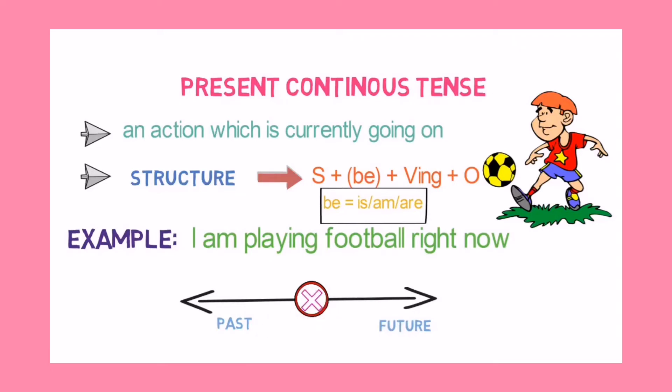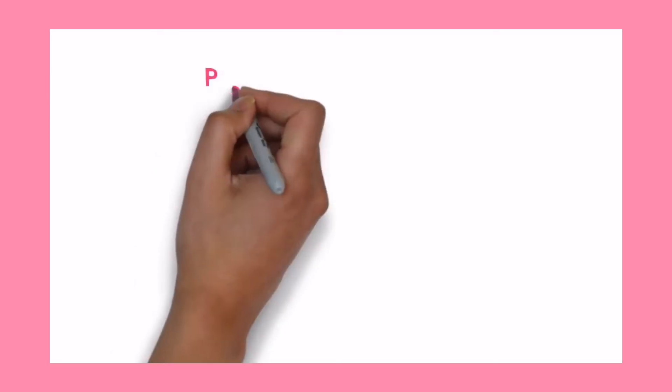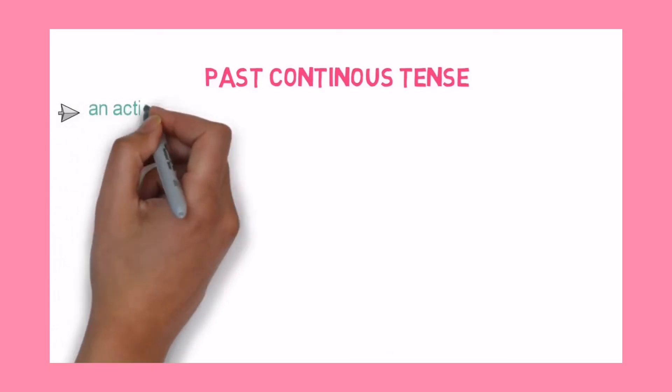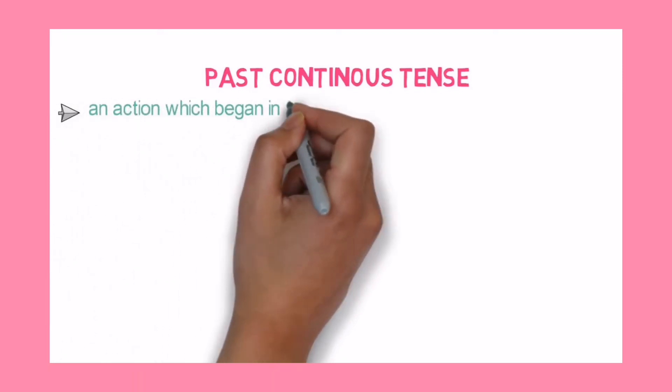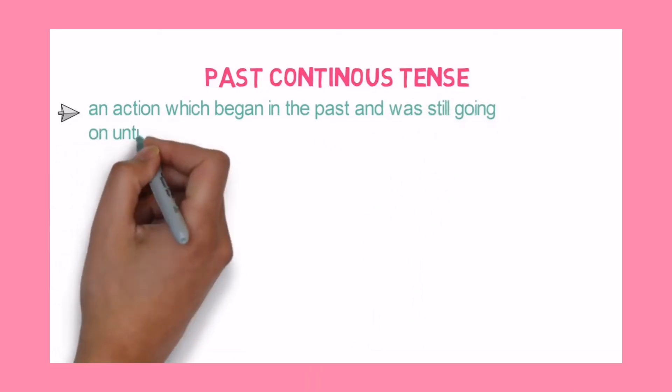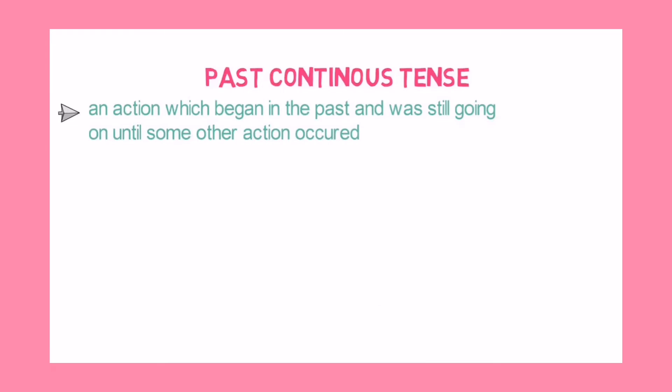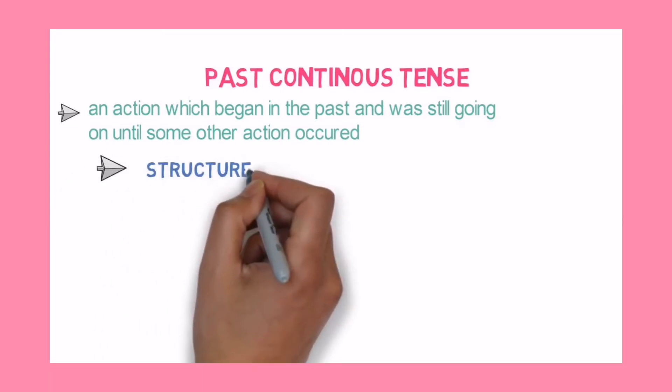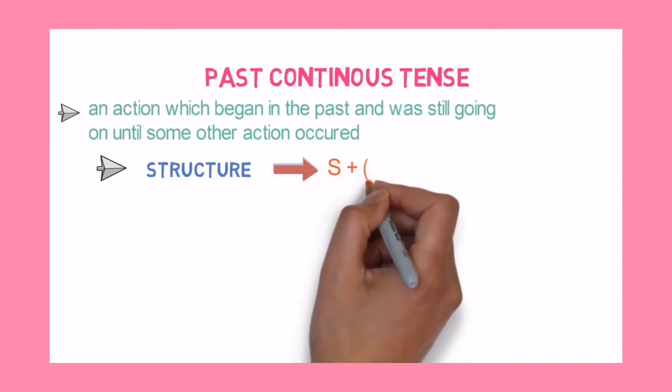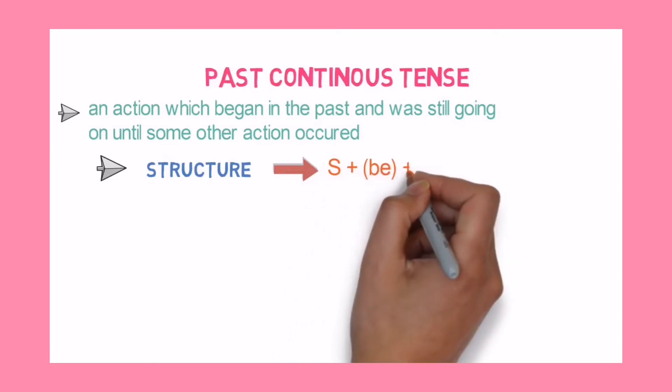Now let's look into the next tense. Our next tense is past continuous tense. This tense refers to an action which began in the past and was still going on until some other action occurred. The structure of past continuous tense is subject plus verb be plus verb-ing form plus object.